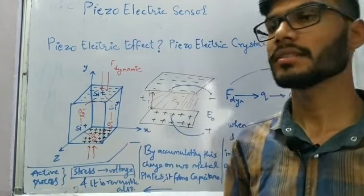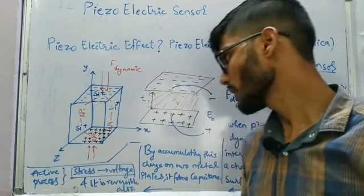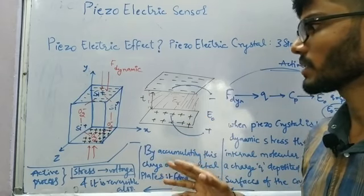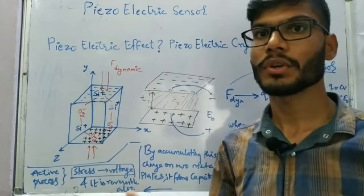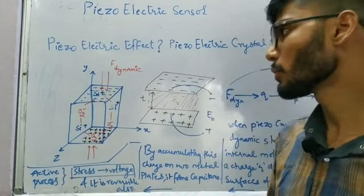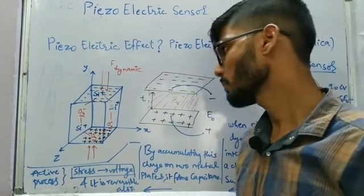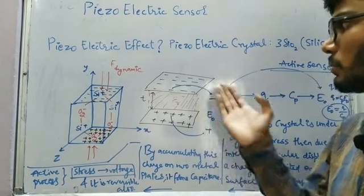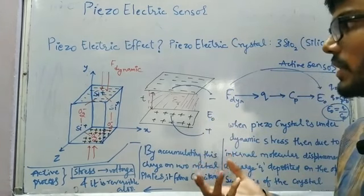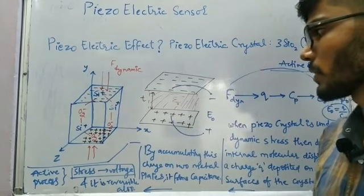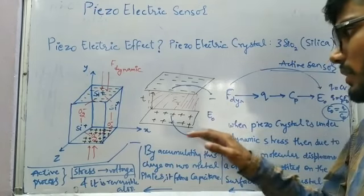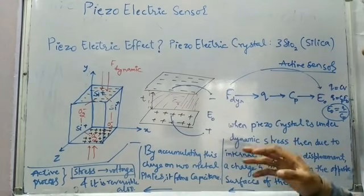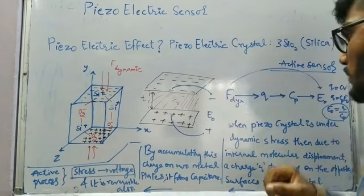As mentioned earlier in the case of capacitance, we talk about relative permittivity εR, because the crystal has material inside it — it is not pure air. So it will have some relative permittivity of the medium. If we apply dynamic force on a crystal, it is going to accumulate charge on its opposite faces.